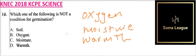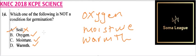So these three we can find them — oxygen is correct, moisture is correct, warmth is correct — so A is not correct. The correct answer is A: soil is not a condition for germination. That is how you answer that and you get a mark for that.